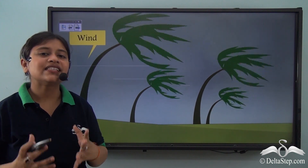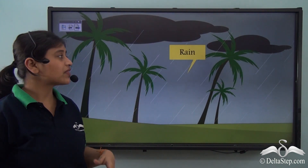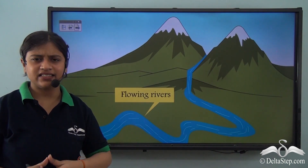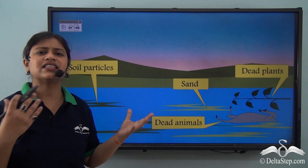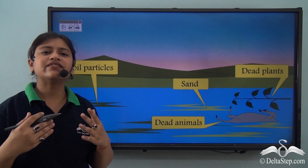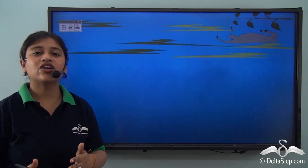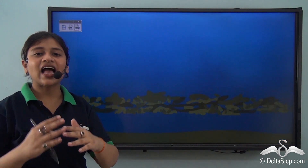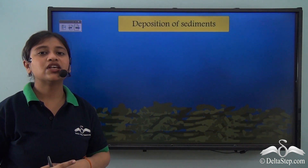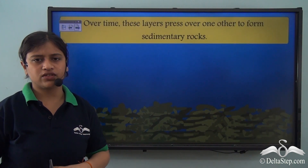How exactly were these sedimentary rocks formed? Agents like wind, rain and flowing river carried these sediments along with dead plants and animals from one place to another, and they got eventually deposited on the seabed. Over the years they got deposited in layers, and due to compaction and cementation they form sedimentary rocks. Sedimentary rocks take thousands of years to form.